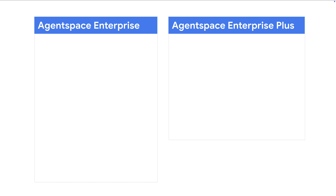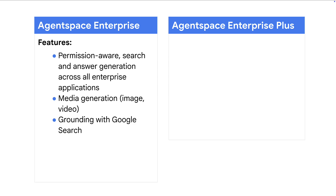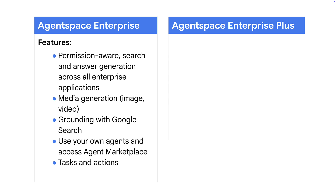What do you get exactly today, and how much does it cost? Agent Space has two tiers: Enterprise and Enterprise Plus. The Enterprise tier starts at $25 per user per month, and includes permission-aware search and answer generation across all enterprise applications, media generation, grounding with Google Search, user-owned agents and access to the agent marketplace, tasks and actions, and Notebook LM Enterprise is included as well.